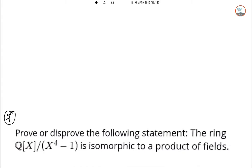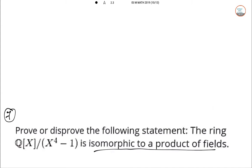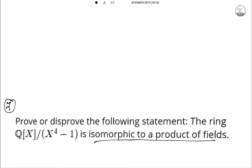So prove or disprove the following statement: the ring Q[X]/(X⁴ - 1) is isomorphic to a product of fields. This is about group ring field structure, this is actually from field theory.